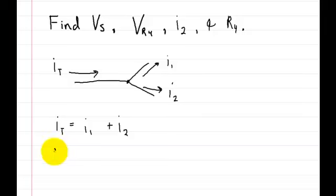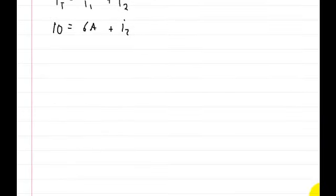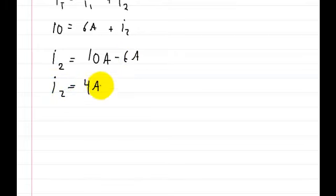We know that the total current is 10 amps, and we know that I1 is equal to 6 amps. And we don't know what I2 is, but if you just manipulate the equation, you'll get the answer. So I2 is equal to 10 amps minus 6 amps, and then I2 is just going to be equal to 4 amps. So now we've solved for that current.